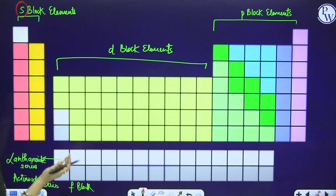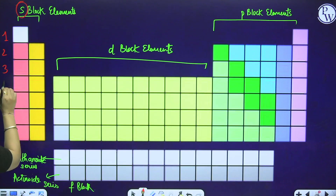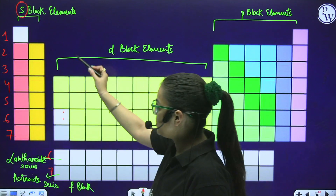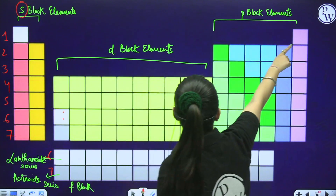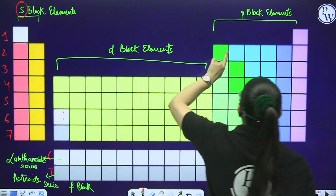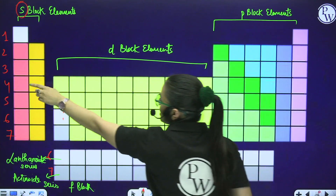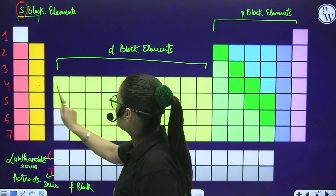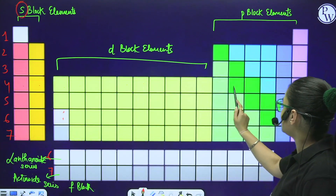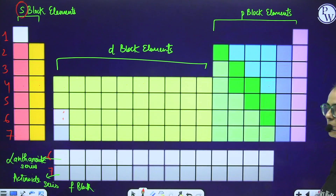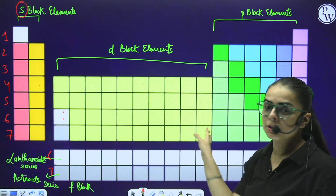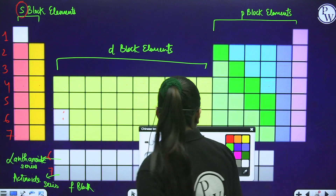Let us count the periods and groups. There are 7 periods. Period 1 contains 2 elements. Period 2 contains 8 elements. Period 3 contains 8 elements. Period 4 contains 18 elements. Period 5 also 18. The groups: Group 1, Group 2 (S-block), then Groups 3 through 12 (D-block), and Groups 13 through 18 (P-block). The lanthanoid series runs from element 58 to 71 (after lanthanum, element 57, it jumps to 72). The actinoid series runs from element 90 to 103 (after actinium, element 89, it jumps to 104). These F-block elements are kept separately.